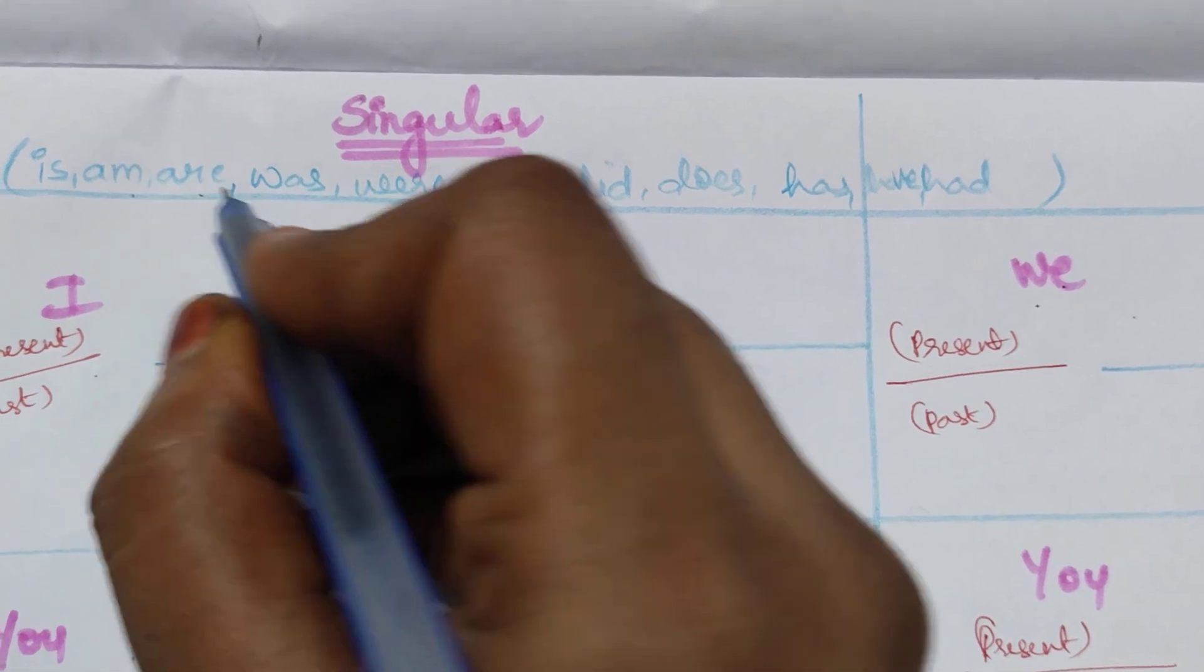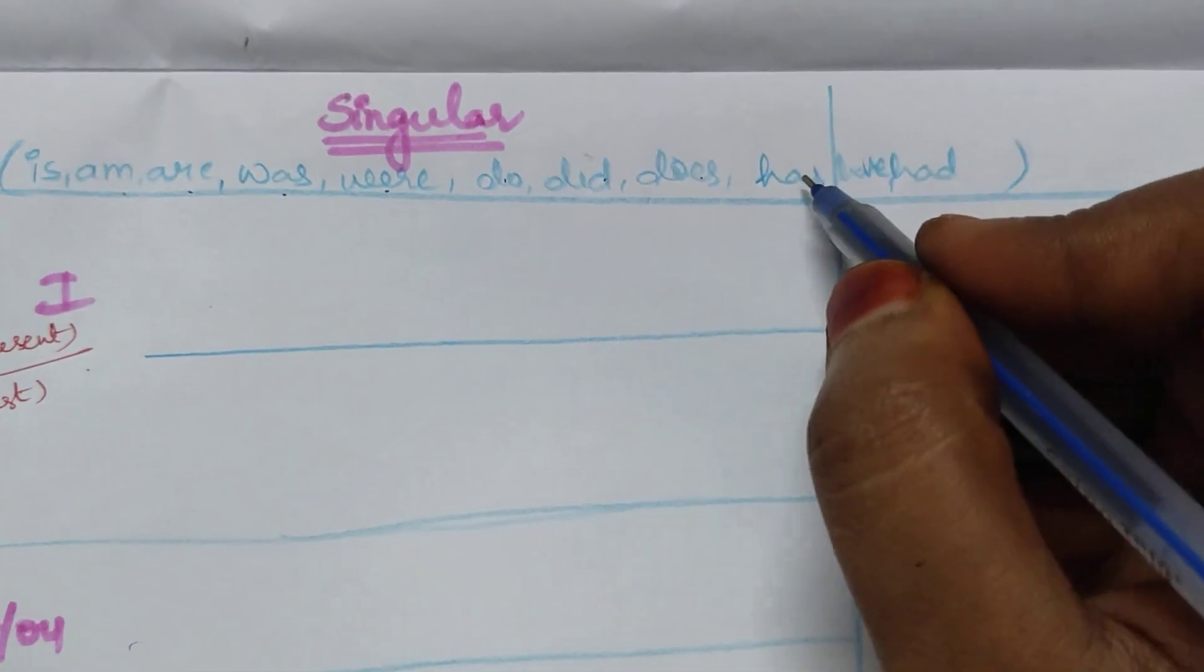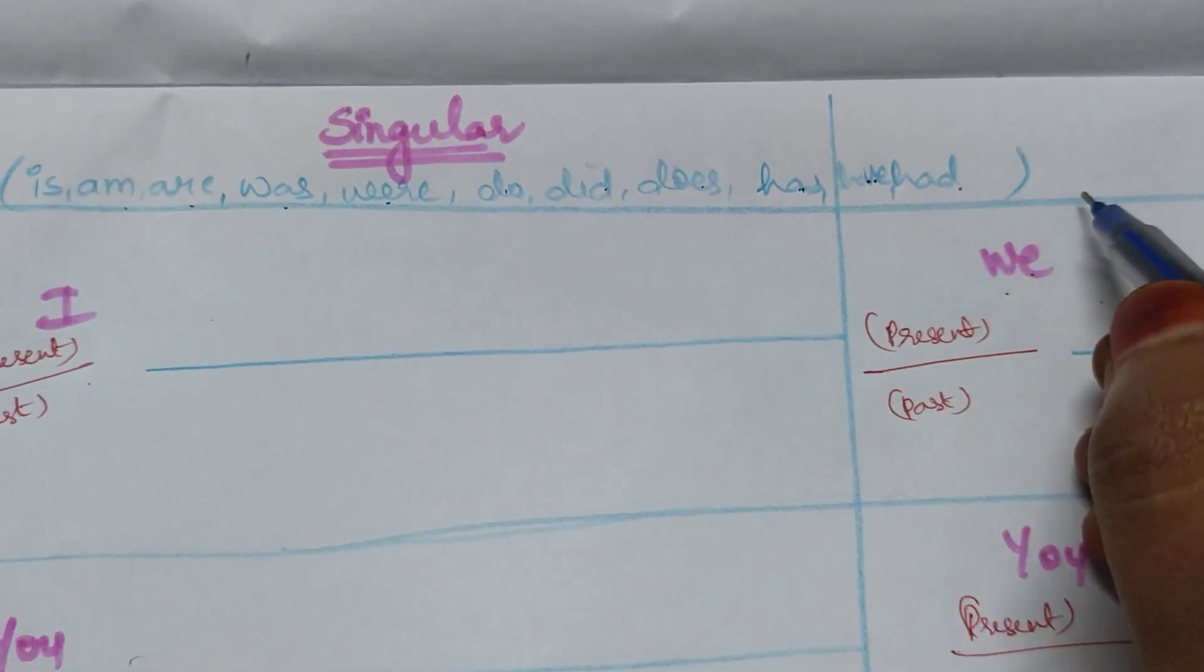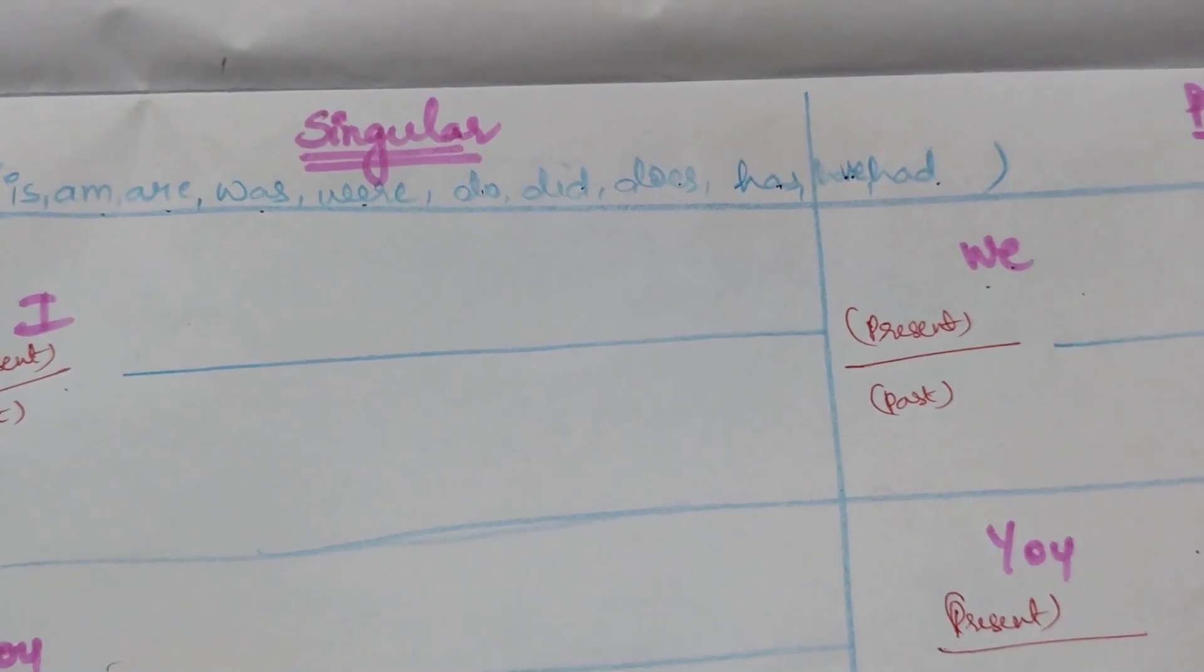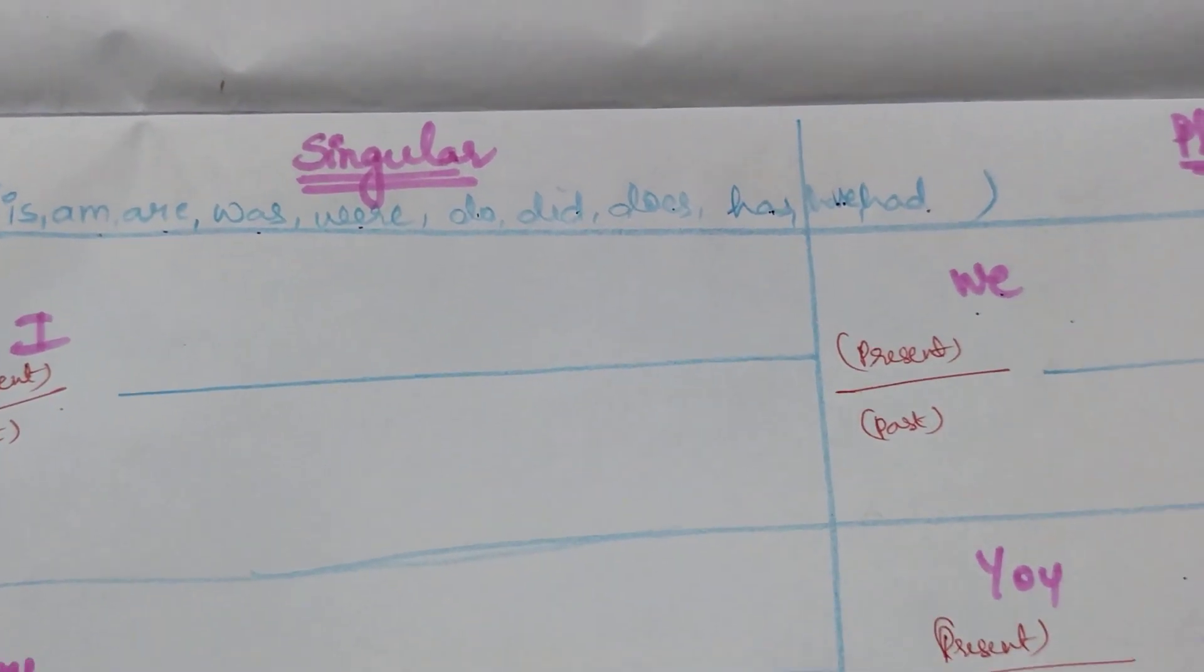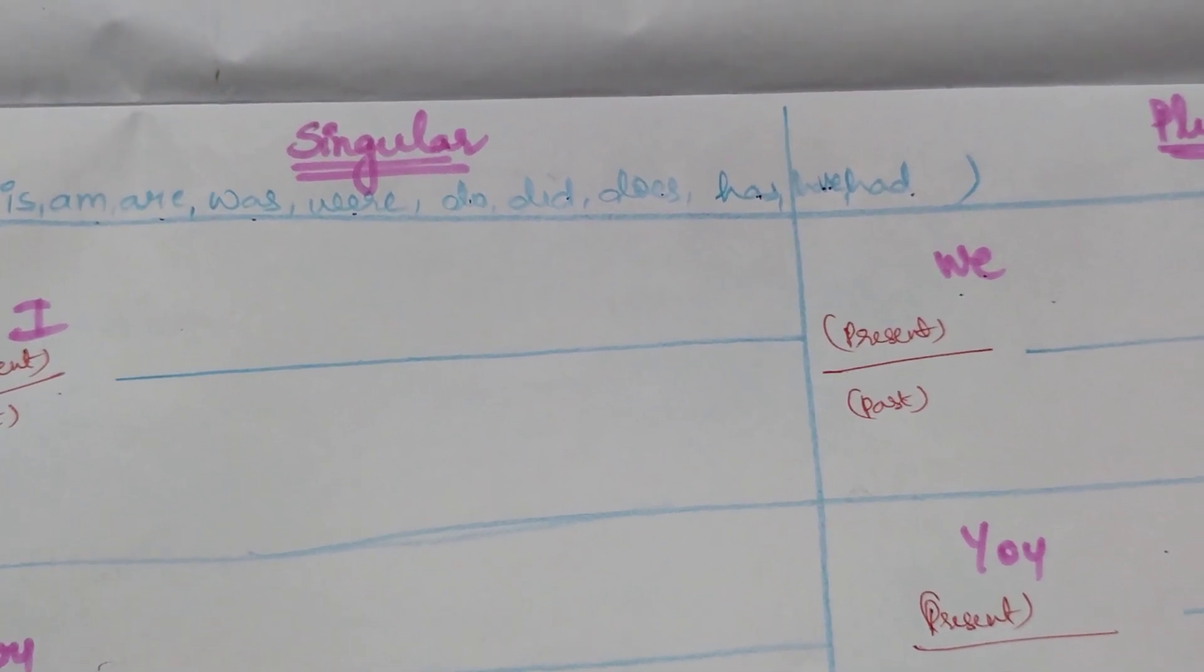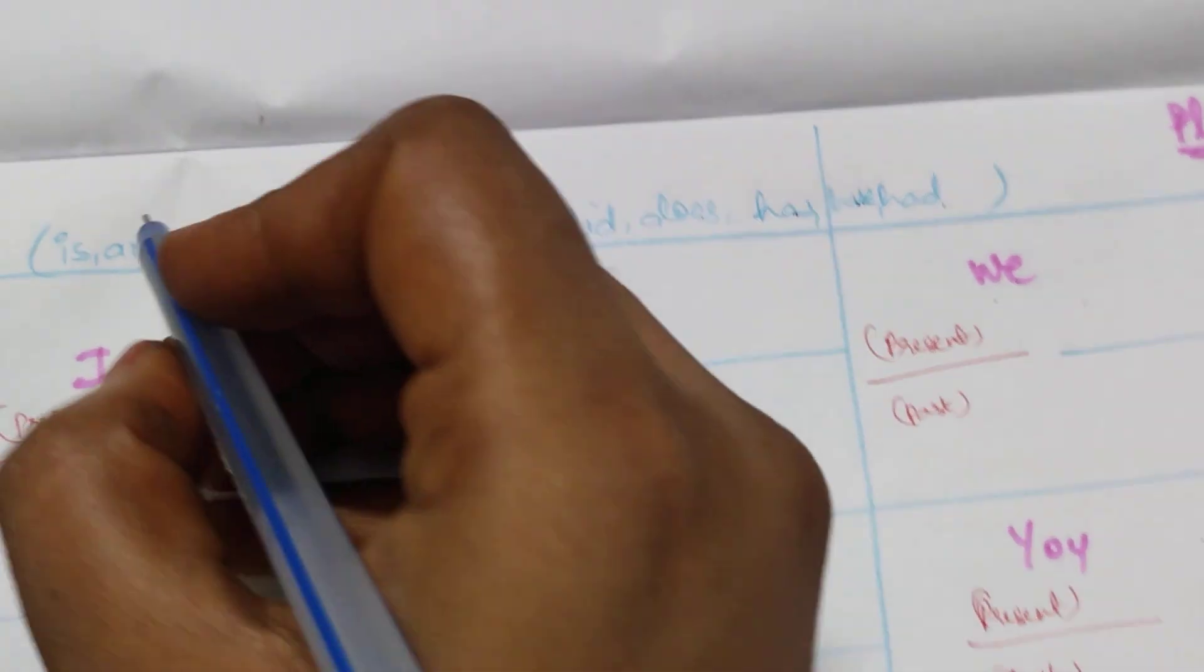Now is, am, are, was, were, do, did, does, have, has, had - these are the major helping verbs which we use. And these are the major villains who will be confusing us. So if we know the logic, they will become friends. If not, they will remain as villains. So let us make them friends.